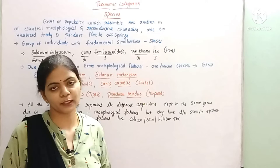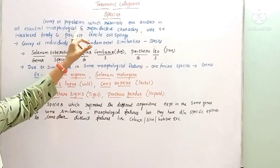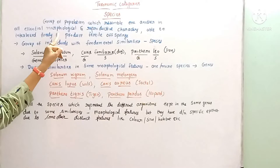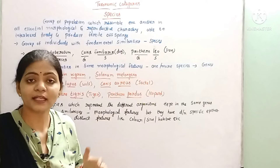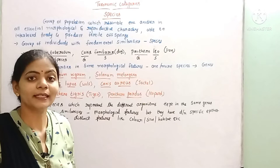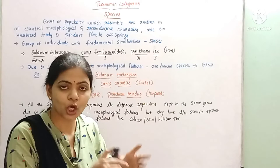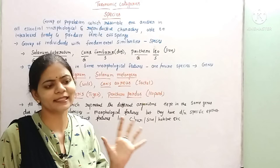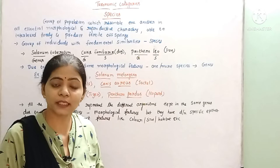Now we will see about all seven categories one by one. Species is the least rank, which shows the most similar characters. Species is a group of populations which resemble one another in morphological and reproductive characters, and they are able to interbreed freely and produce fertile offspring. Organisms which are morphologically similar and reproductively identical and able to interbreed with one another to produce fertile offspring — that is called species. For example, dogs are one species, cats are another species, tigers are another species.